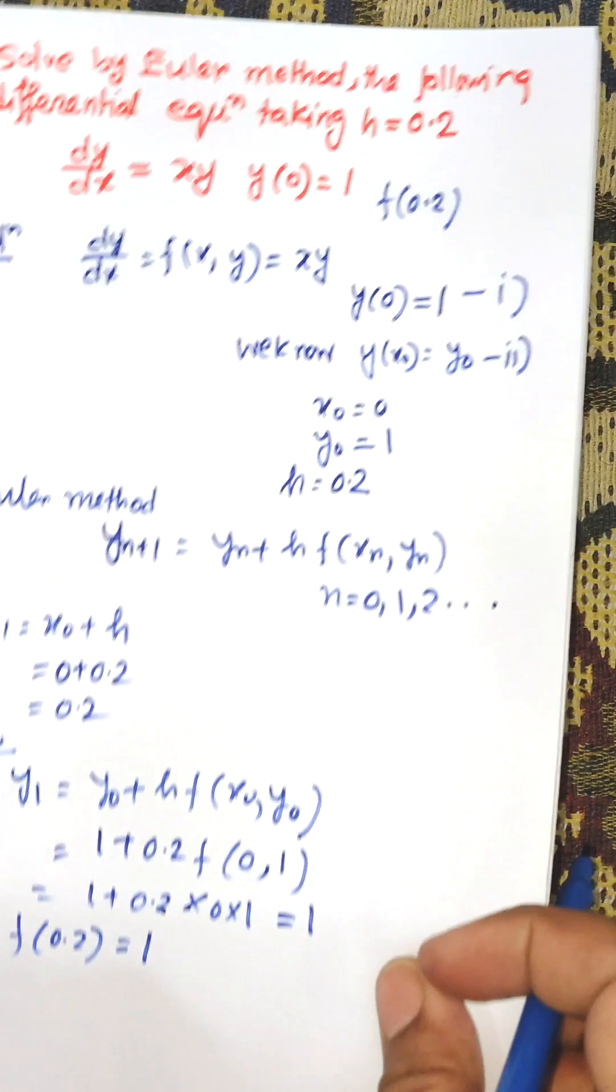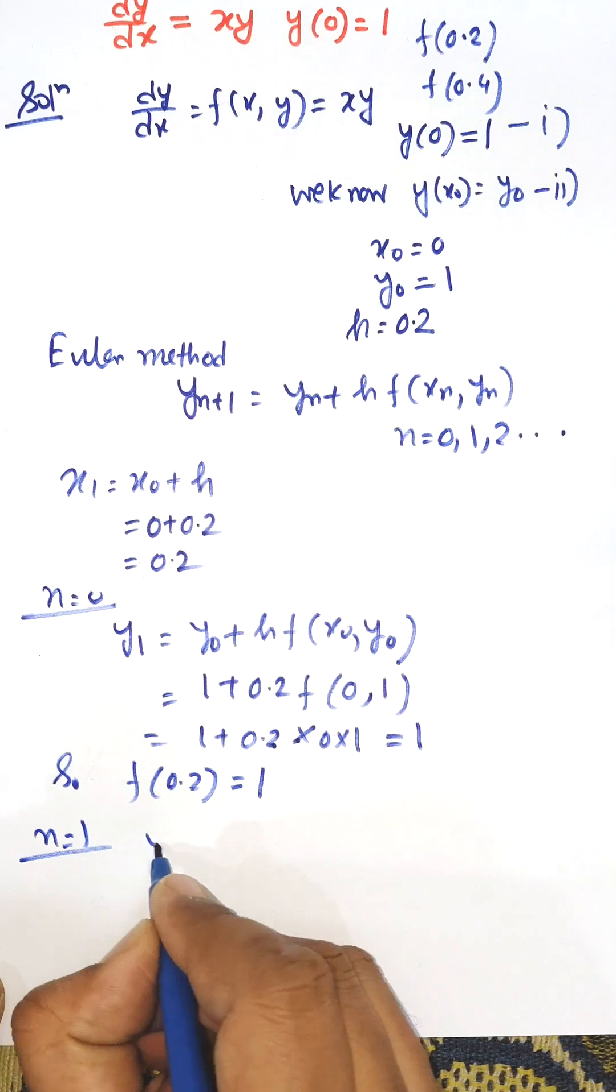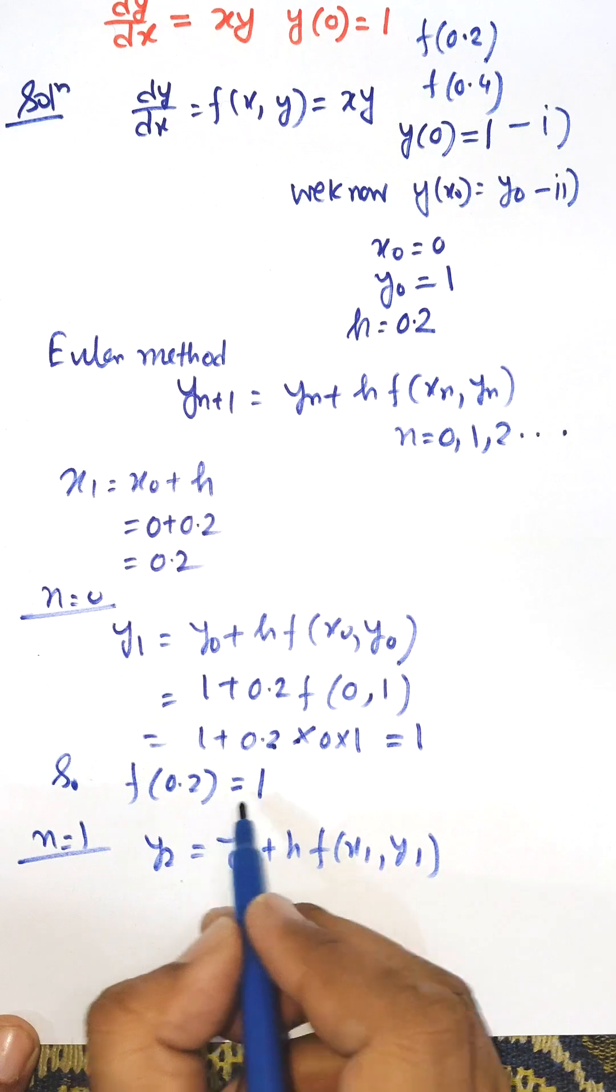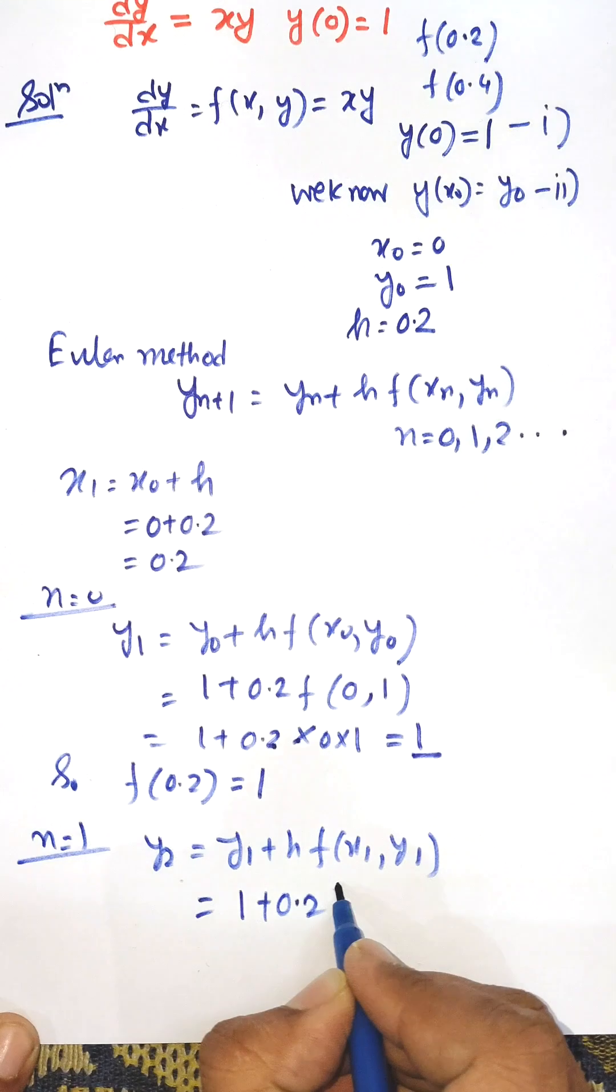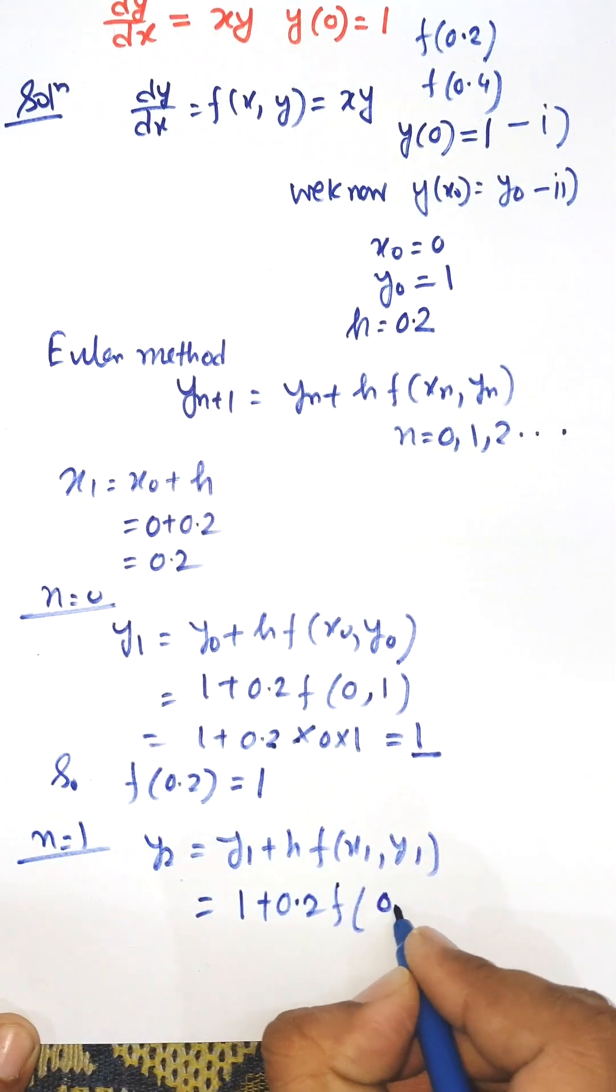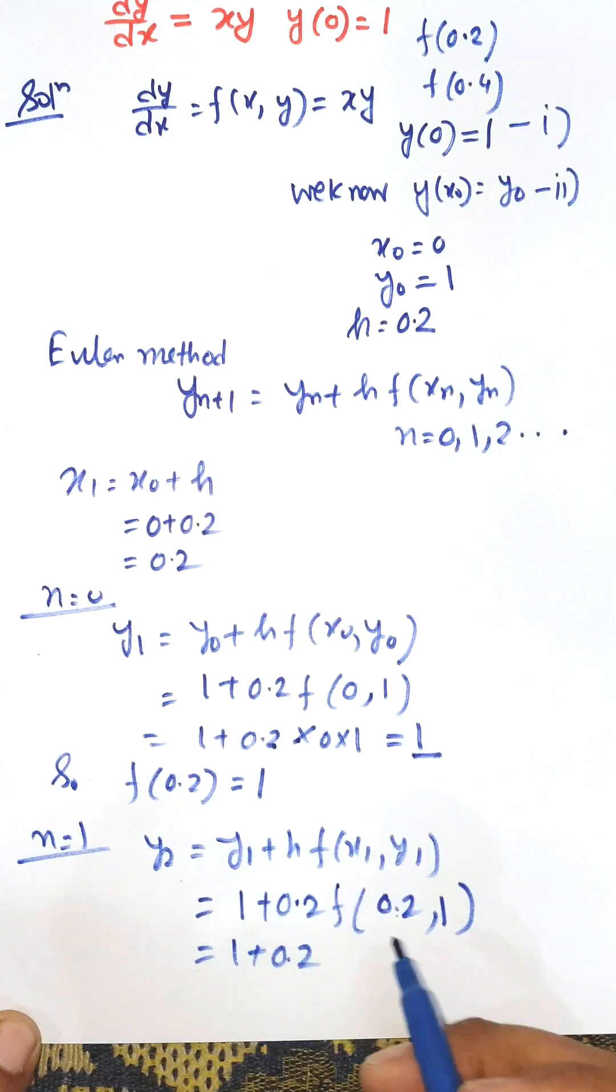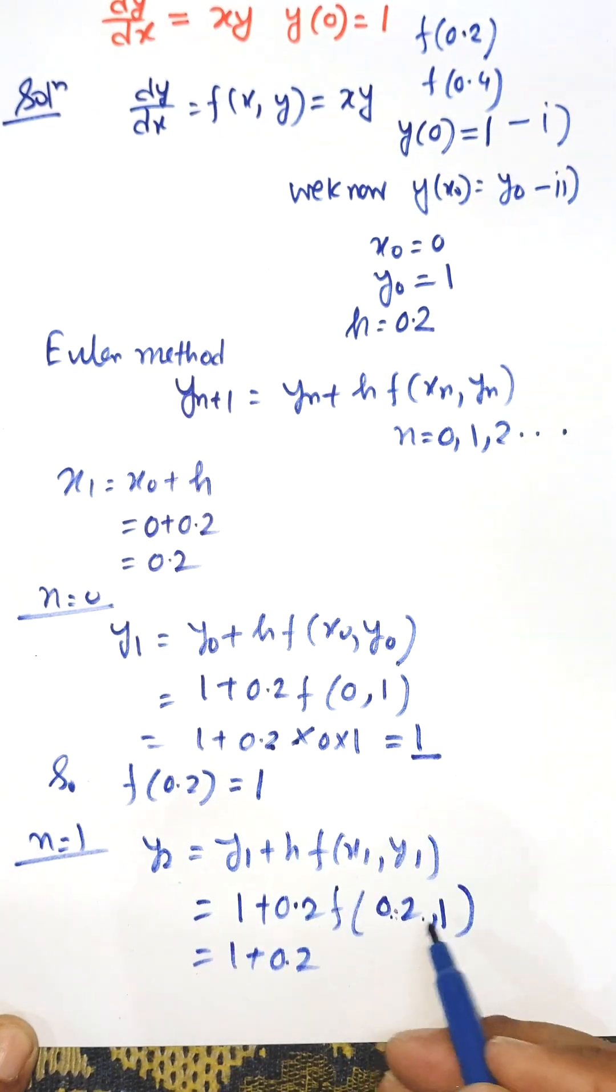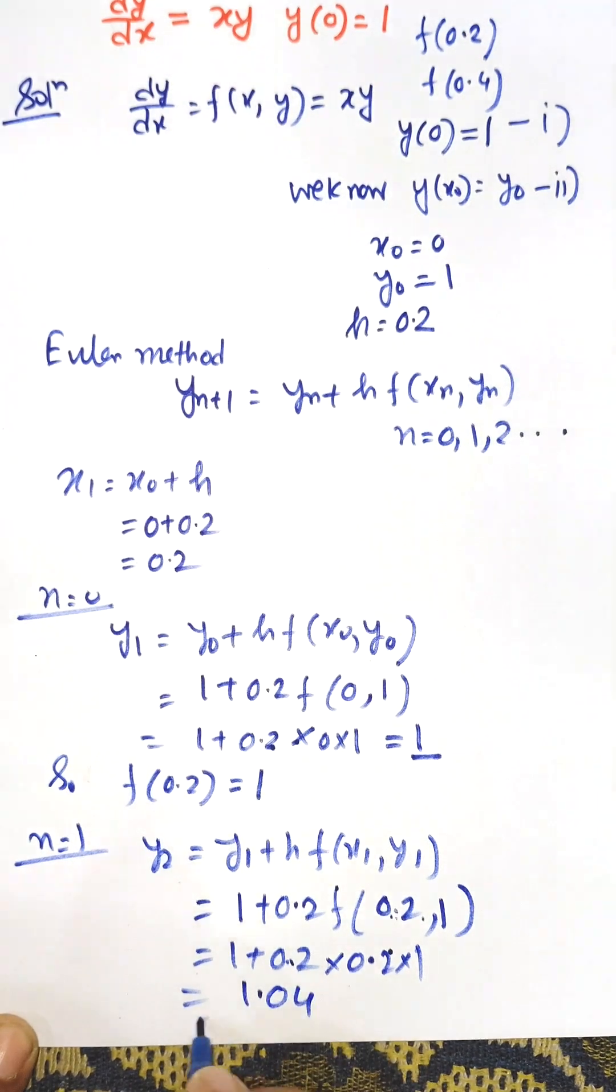Similarly, if we want to calculate, suppose, y(0.4), then we can easily calculate for n = 1, y2 = y1 + h·x1·y1. Here, y1 is 1, h remains same 0.2, x1 is 0.2, and y1 is 1. So 1 + 0.2·(0.2·1). After multiplying this equation, we will get 1.04.